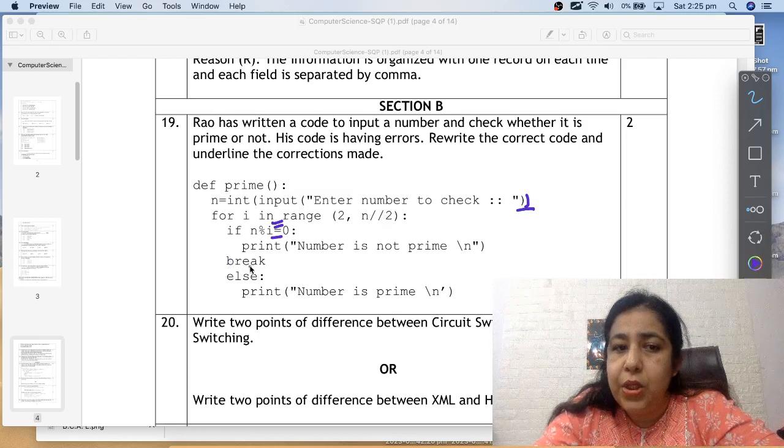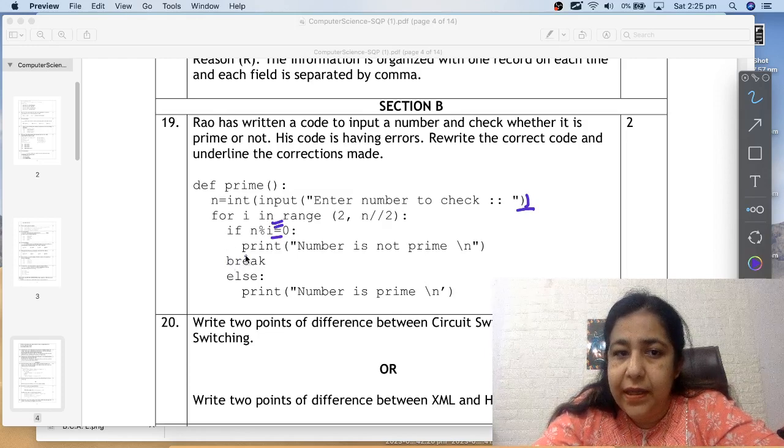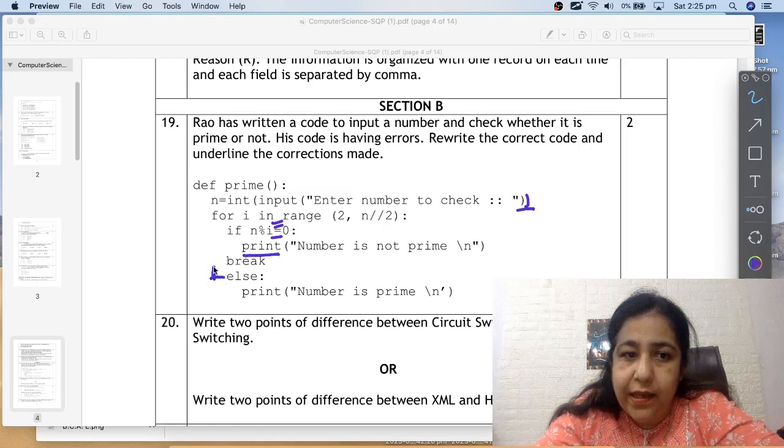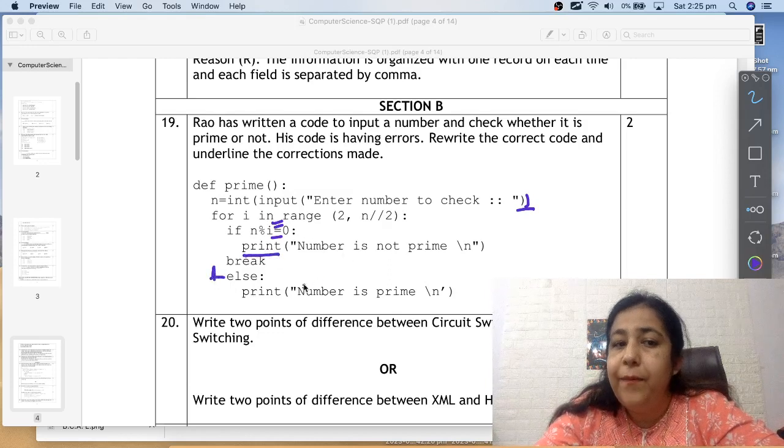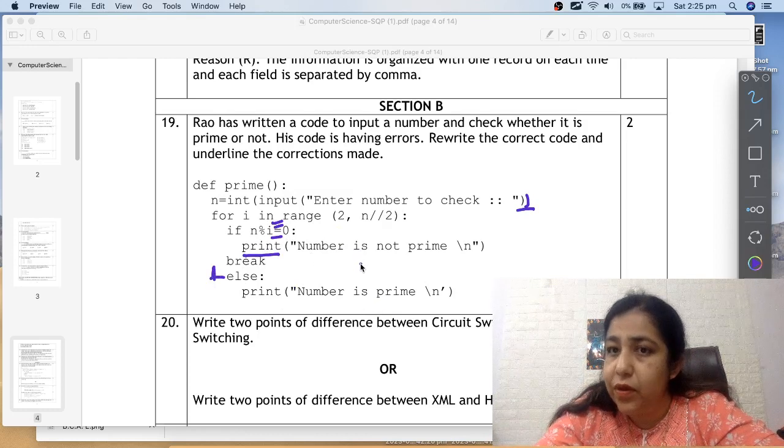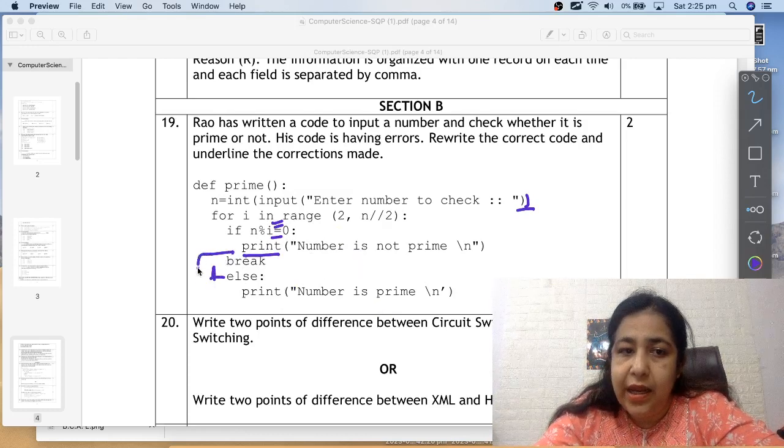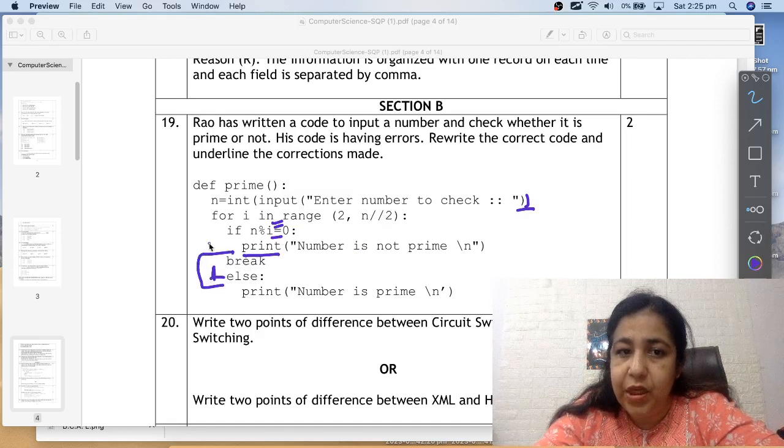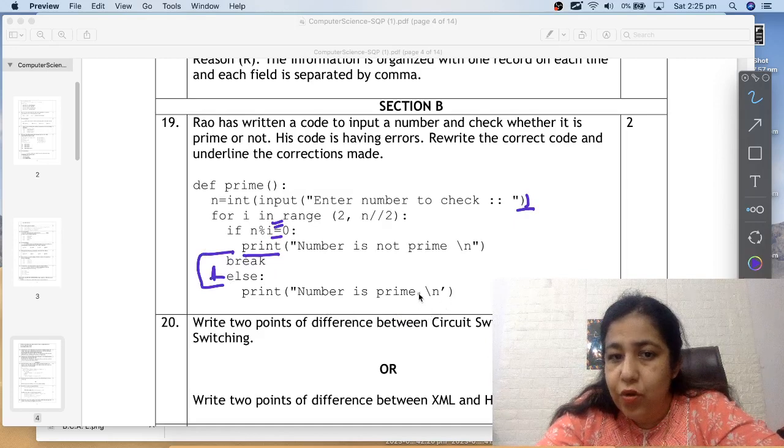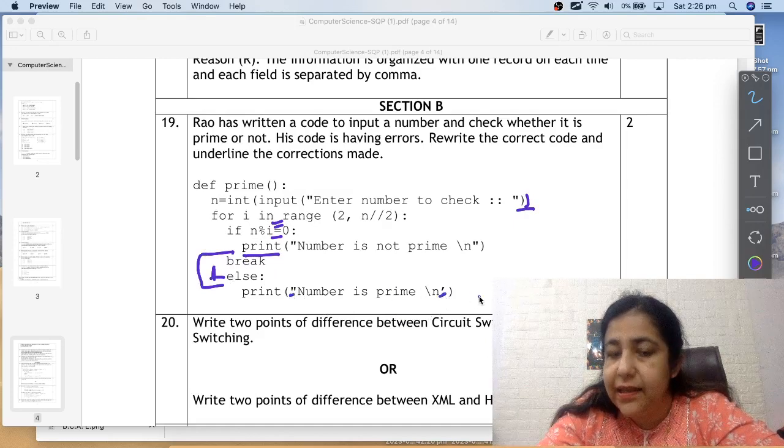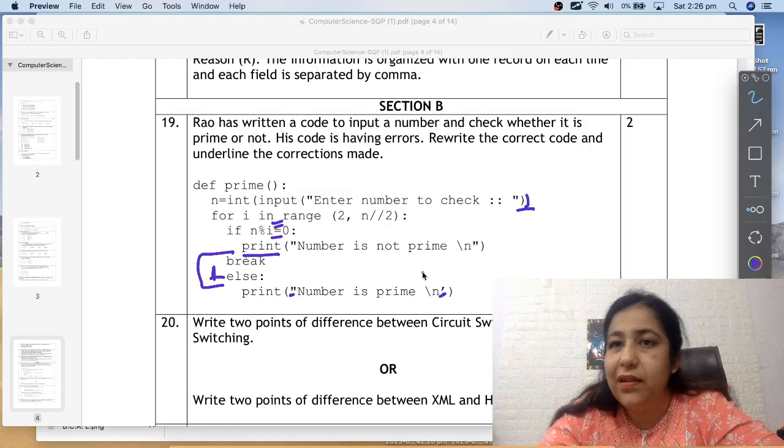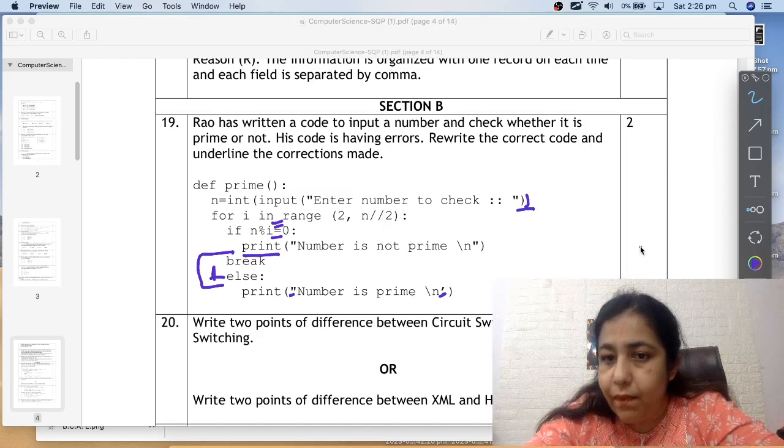For i in range is perfect. Now the condition should not be single equal to here, but it should be double equal to. Because the condition is always double equal to, not single equal to. So we have to write n mod i double equal to 0. This is the problem of indentation. Break is not here, break is here. Which is not for, because the loop is at the same time.